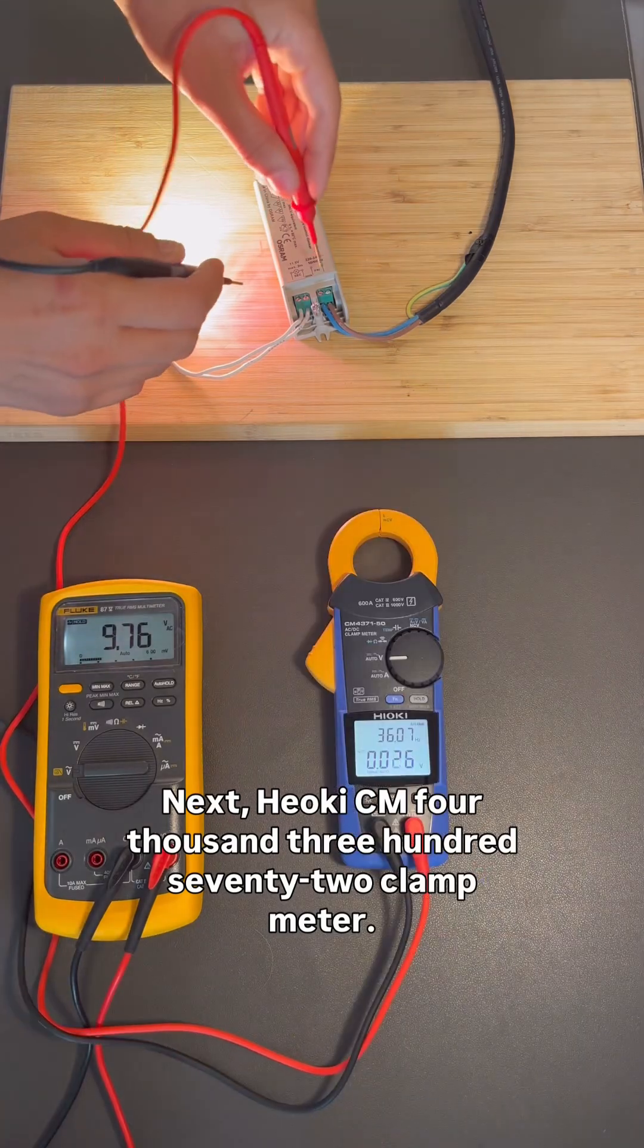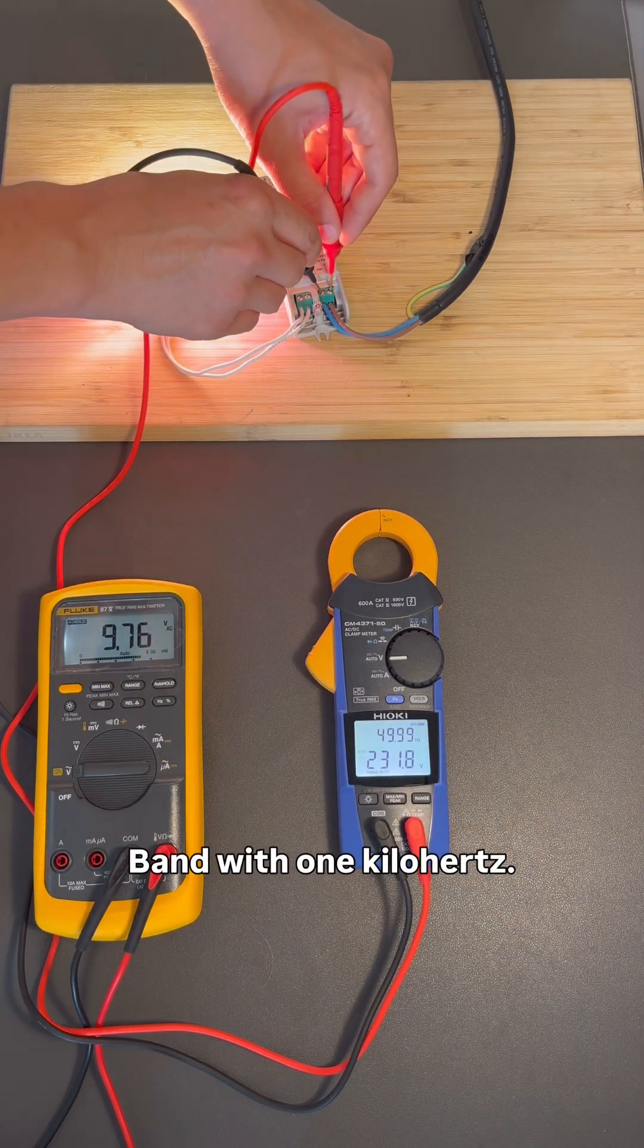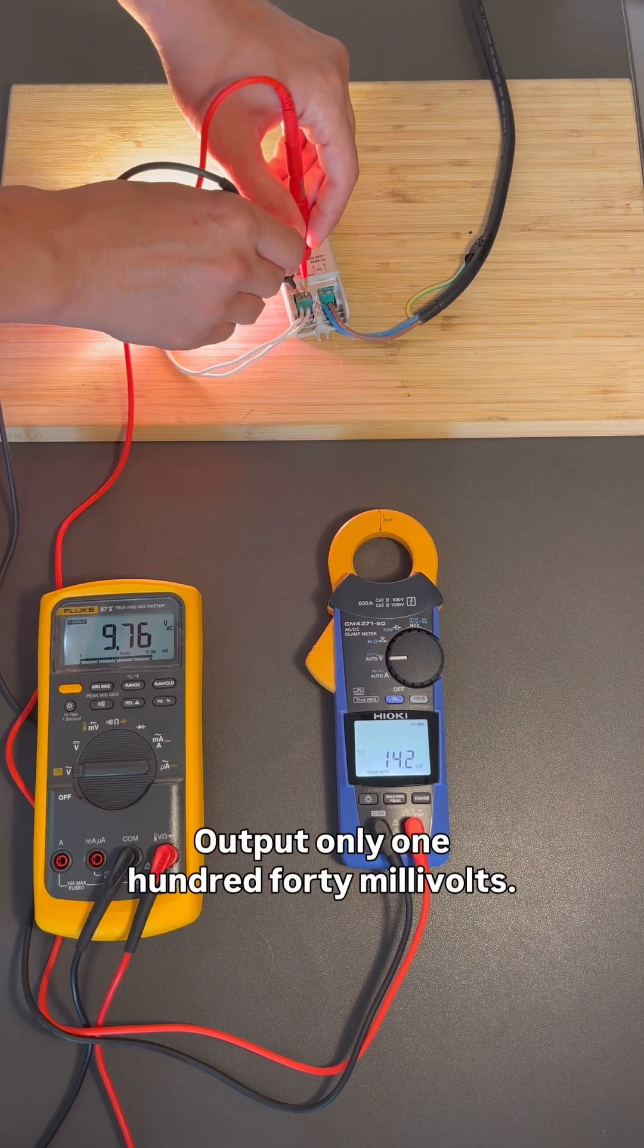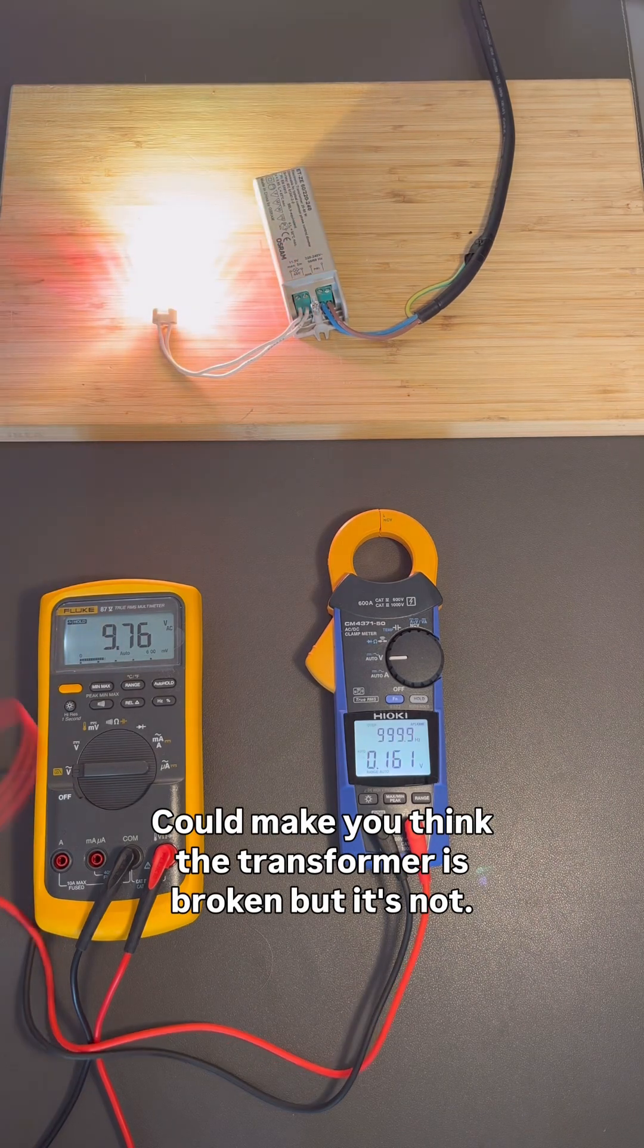Next, Hioki CM4372 clamp meter. Bandwidth, 1kHz. Input, 50Hz. Fine. Output, only 140mV. Could make you think the transformer is broken. But it's not.